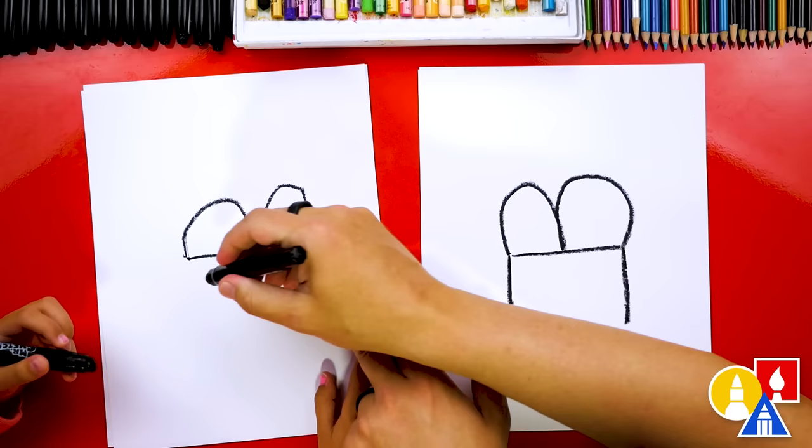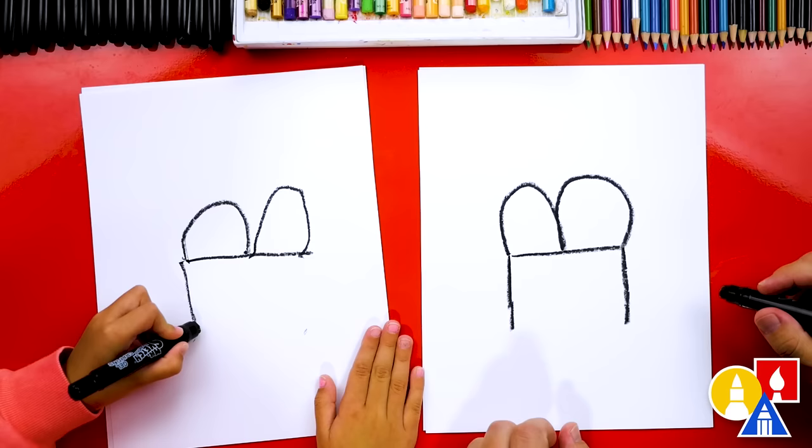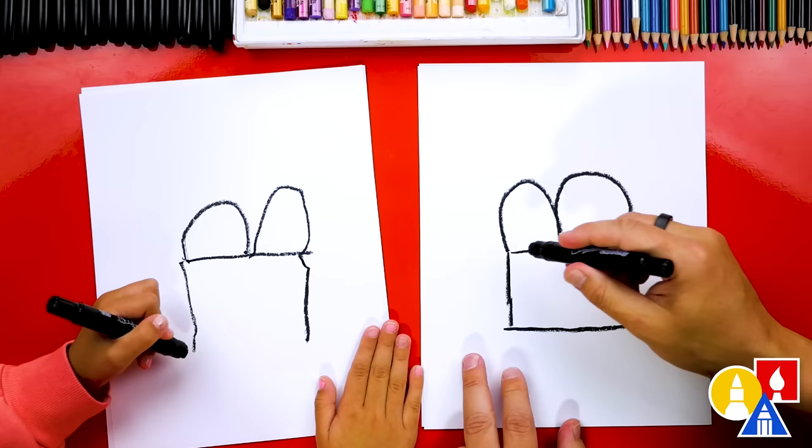We're going to start here, draw it down to there. And draw another one down here. There you go. And then let's connect the bottom. What shape is that? A square. A square. Or a rectangle.